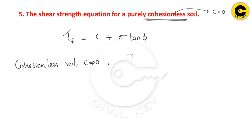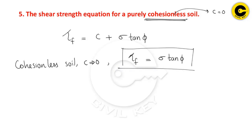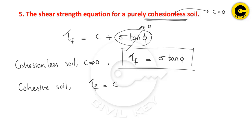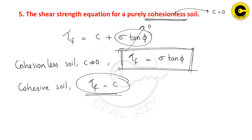This question is about purely cohesive soil. For purely cohesive soil, the friction angle is zero, so τf is equal to c. If you look at frictionless soil — cohesionless soil — τf is equal to σ tan φ.